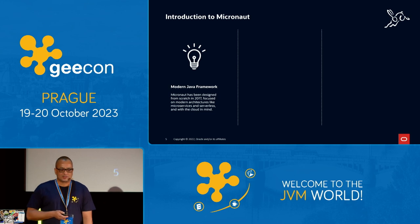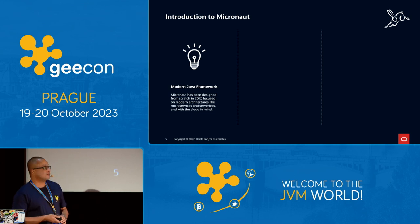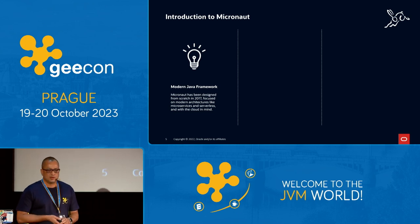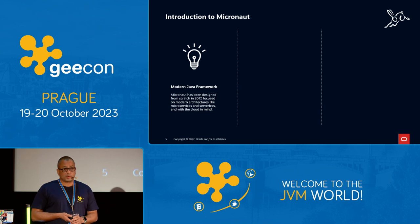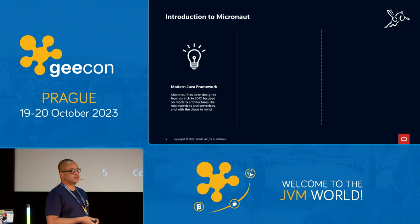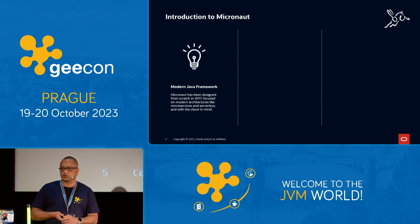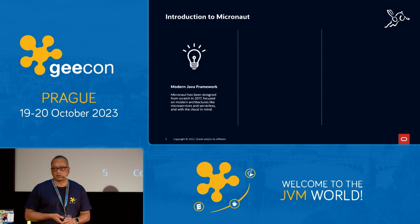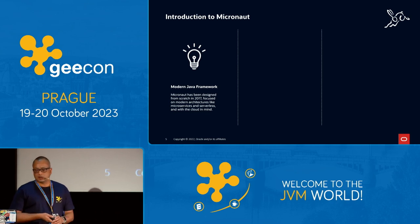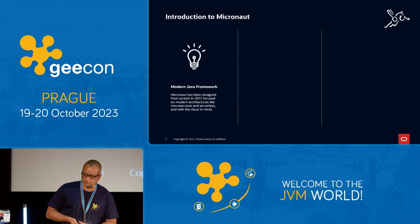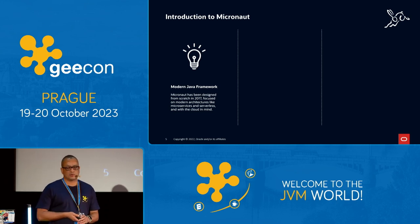Micronaut is a modern Java framework designed from scratch back in 2017, supported by Oracle. Oracle has an internal team that actually contributes to the development of Micronaut. It is designed for cloud-native environments — cloud-native-friendly by default — good for things like serverless, microservices, and so on, with quite interesting features. We recently announced Micronaut 4.